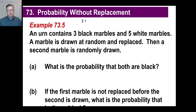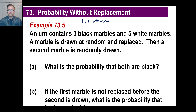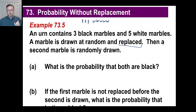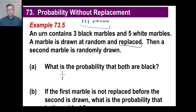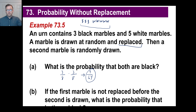An urn contains 3 black marbles and 5 white marbles. A marble is drawn at random and replaced, then a second marble is randomly drawn. What's the probability that both are black? The probability that the first marble is black is 3 out of 8. Since it's replaced, the probability stays the same for the second draw — also 3 out of 8. Multiply them together: 3/8 times 3/8 equals 9 out of 64. That's the probability of drawing two black marbles with replacement.